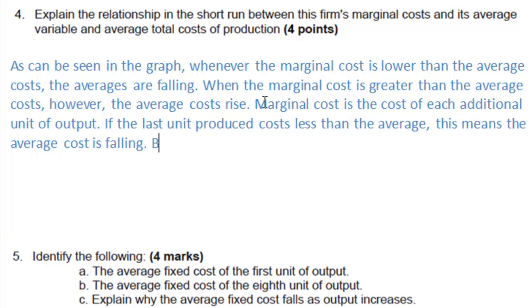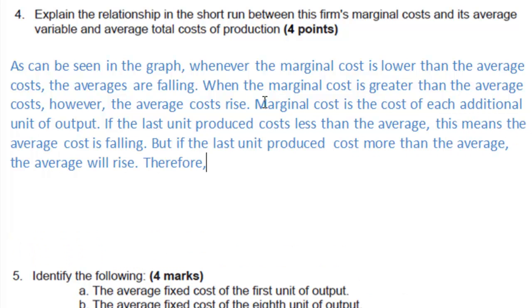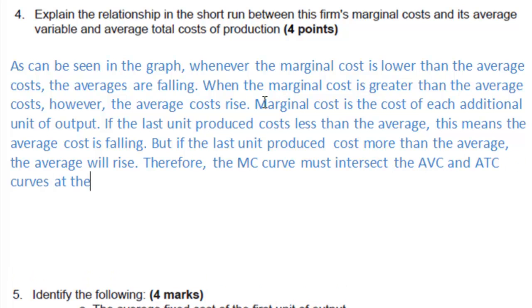If the last unit I produced costs less than the average unit then the average cost falls. However if the last unit I produced costs more than the average the average rises.